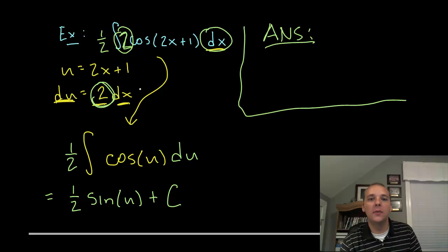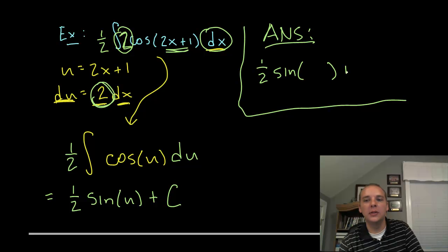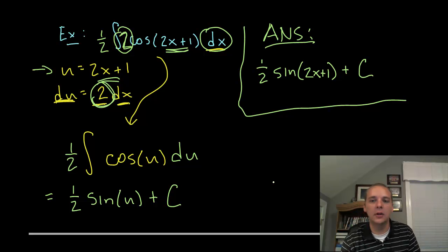Alright, now our final answer should be written back in terms of x like the original problem was written. So our final answer, rather than saying 1 half sine u plus c, we need to go back and figure out what was u. And sure enough, if you look right here, u was the same as 2x plus 1. And so we can take that u out and write it like 1 half sine 2x plus 1 plus c.